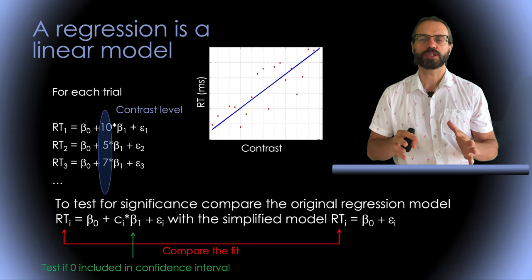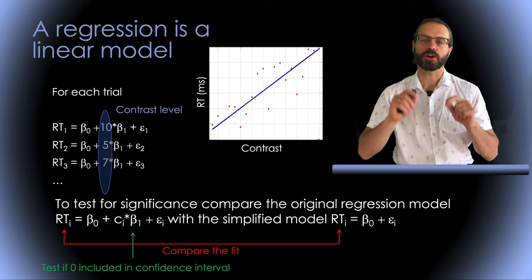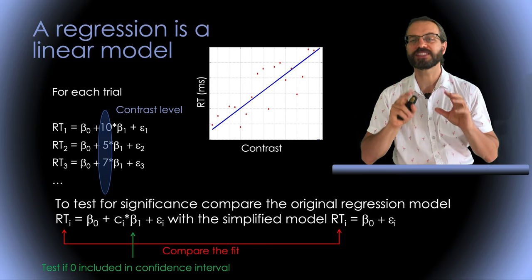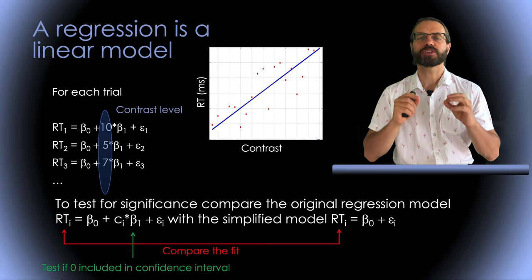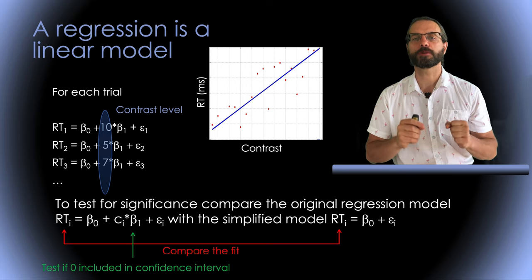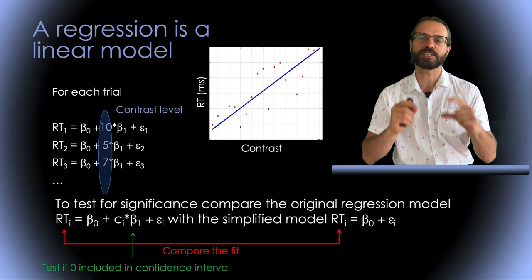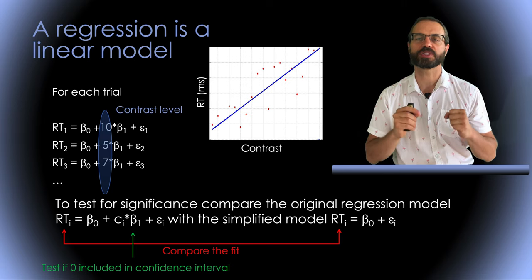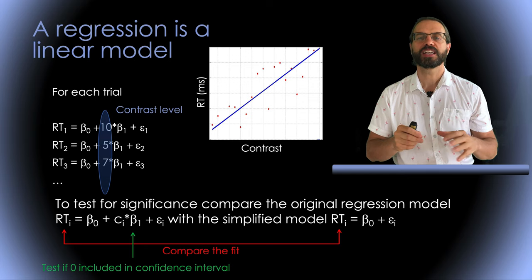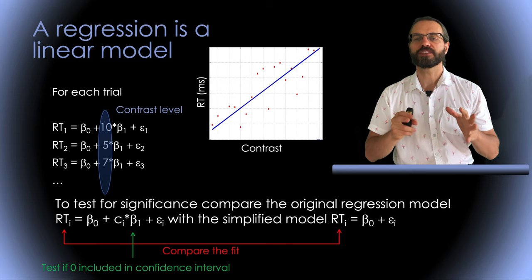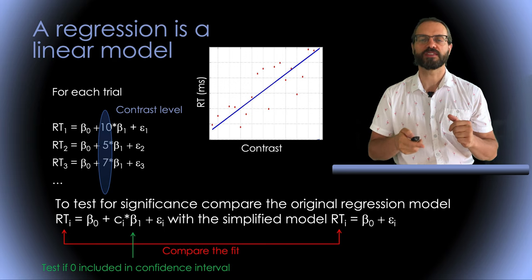To do so we compare the fit of this model, the R square value, with the fit of a simpler model where we would not have the parameter beta one. We can also calculate the confidence interval of the beta one parameter and assess if zero is included in the 95% confidence interval of beta one. If zero is not included it means that beta one is significantly different from zero. So this was a simple if not the simplest form of GLM.